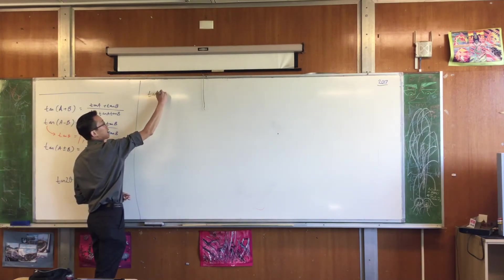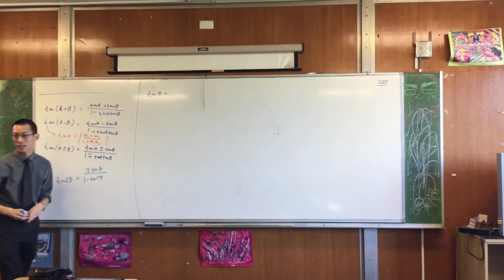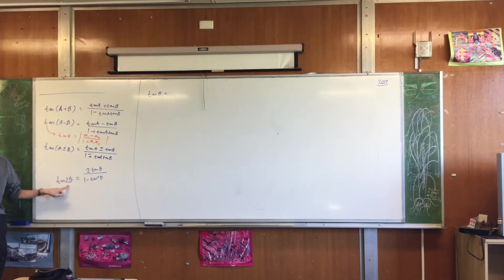Let's just suppose I have tan θ on the left hand side. So I've halved this angle over here. Does that make sense? So therefore, I should halve all these angles over here and it's still a legitimate identity.